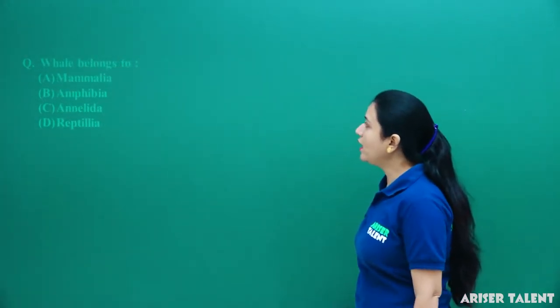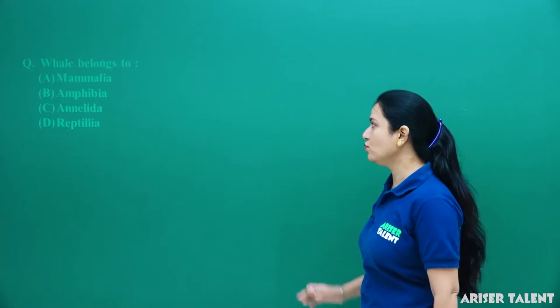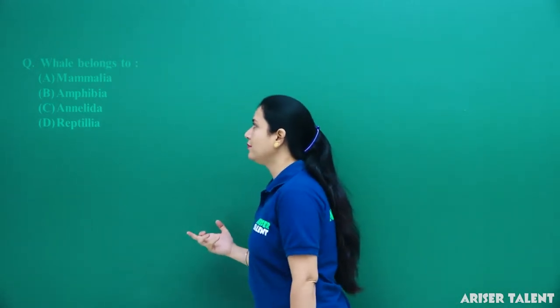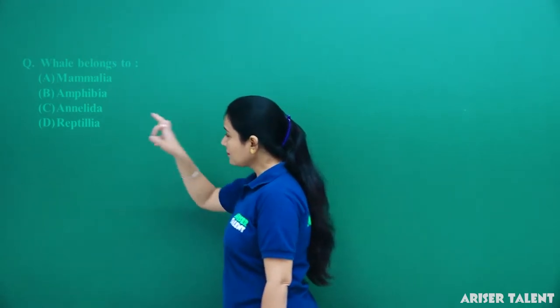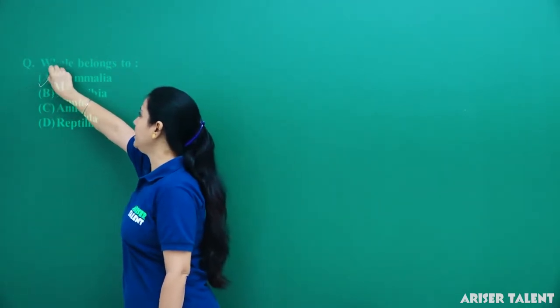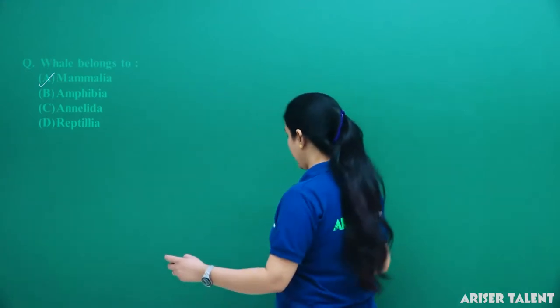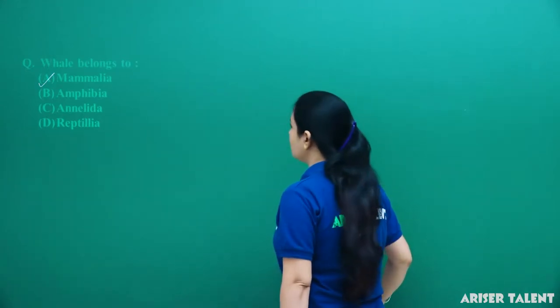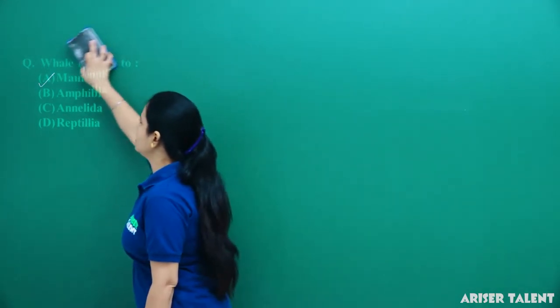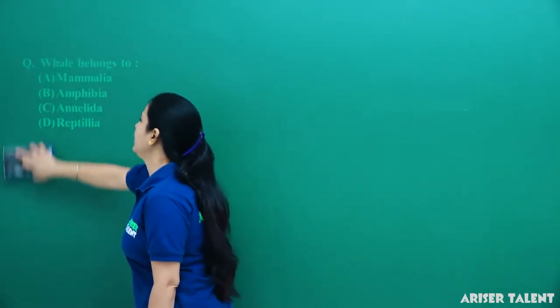Next — whale belongs to Mammalia, Amphibia, Annelida, or Reptilia? As we all know about the properties of whale, it belongs to the Mammalia group because it has features of that group. So option A is the correct answer.